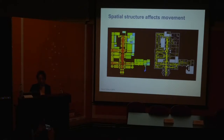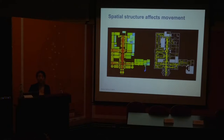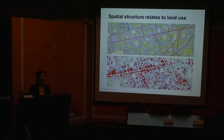An interesting and useful thing about this methodology is that it works at different scales — including the building scale. This is an example of a museum in London. The left-hand side shows the spatial analysis — analyzing the network of spaces and identifying accessibility patterns within the building. On the right-hand side is observed movement, and you can see the more accessible area is attracting more movement. The spatial structure is not the only driver, but it has a crucial role in shaping movement patterns.